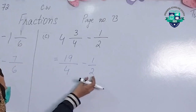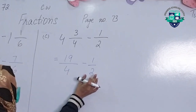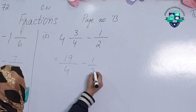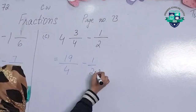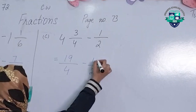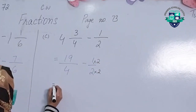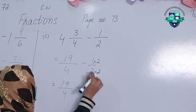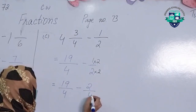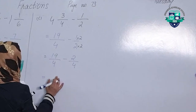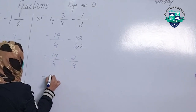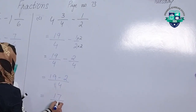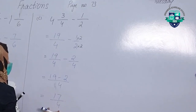2 cannot go on the table of 4, but 4 can go on the table of 2: 2 twos are 4. So we multiply that same number in the numerator also. 19 by 4 minus 1 multiplied by 2 gives us 2 by 4. Now the denominators are the same, so we can subtract: 19 minus 2 equals 17 by 4. This cannot be simplified, so this is the answer.